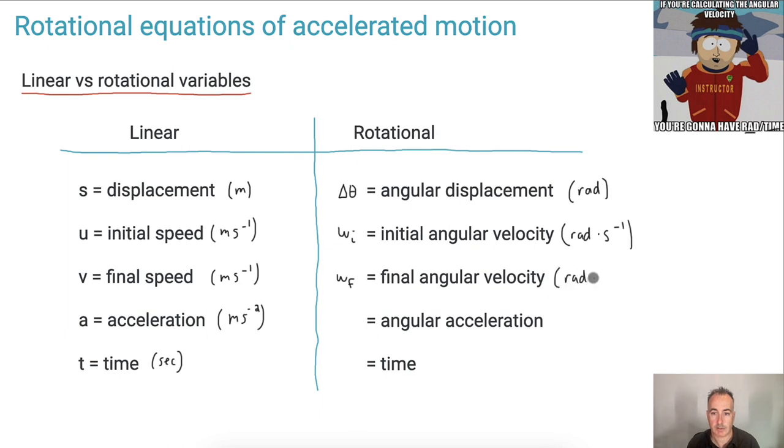So this is in radians per second. So if you just think about the rotational world, just like the linear world, there you go. Again, angular acceleration - instead of a, we use alpha. But again, this is just in radians per second squared. And then we have time, of course, we still use t, and it's still in seconds. So luckily that one doesn't really change.